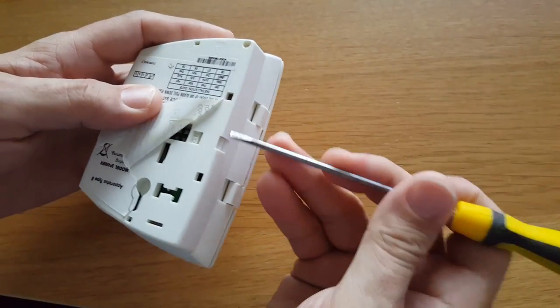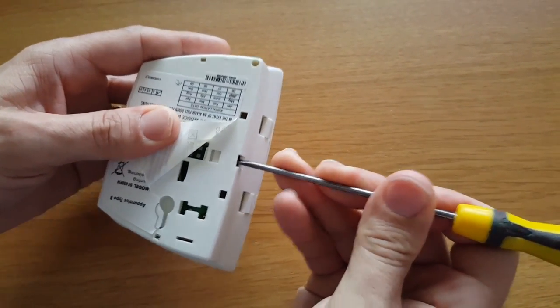By using a screwdriver or the end of a pen, you should be able to push this in. It'll switch the unit off.